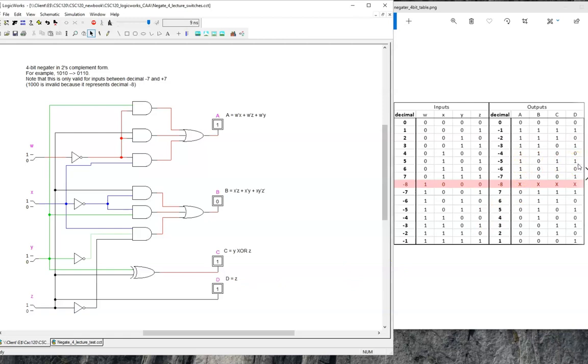Next, let's input negative 3, or 1, 1, 0, 1. The result is 0, 0, 1, 1. Again, this matches with the truth table and also what we would get if we converted the numbers by hand.